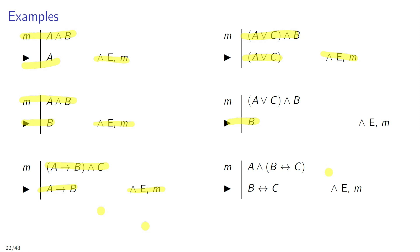Finally, if in line M of your proof you have the conjunction 'A and B if and only if C', you can infer the biconditional 'B if and only if C' — in this case our second conjunct — and justify this inference by citing the rule conjunction elimination applied to line M.